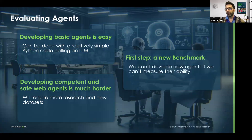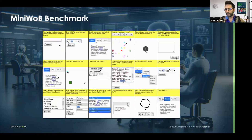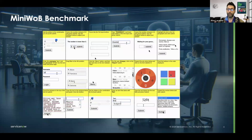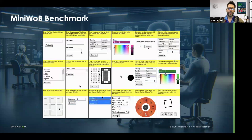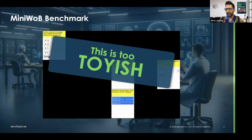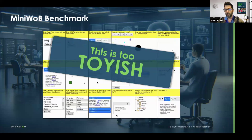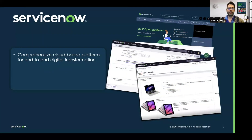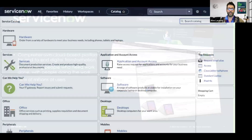The first step is to build a benchmark that can measure the ability we care about. There are already benchmarks out there. MiniWeb is one I particularly like — it has 125 different tasks with a great variety of widgets, and each time you run the same task it's slightly different. The only issue: it's too toyish. It's not representative of real-world tasks and would not properly measure agents' ability to solve tasks. It turns out that at ServiceNow, we have a comprehensive cloud-based platform for end-to-end digital transformation, connecting people who need work done to people who can do it, used by tens of millions of users. So why not use that platform for making a benchmark? This is exactly what we did.